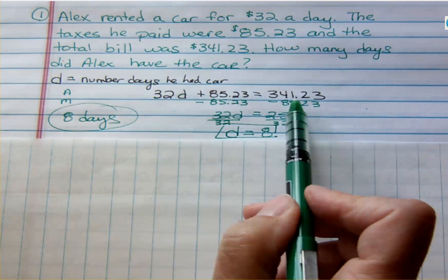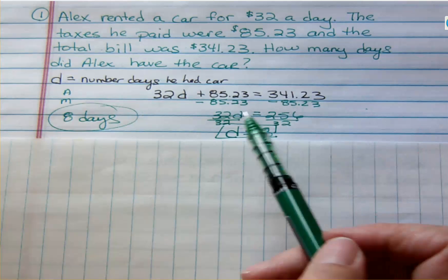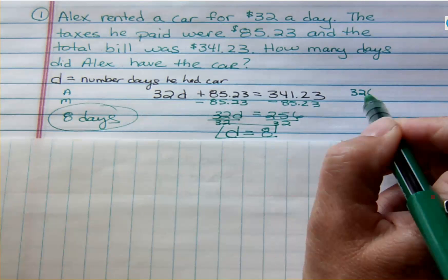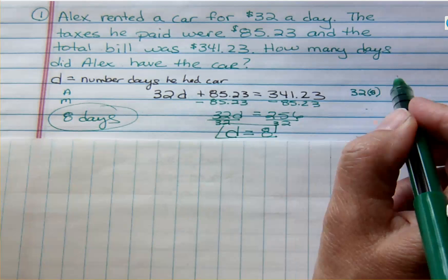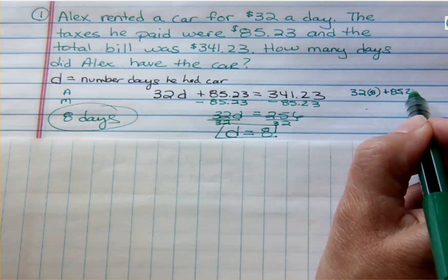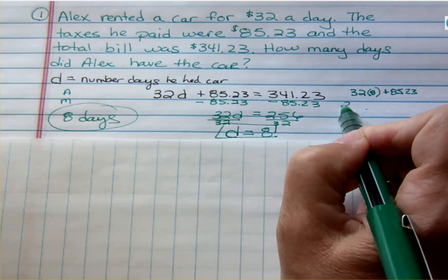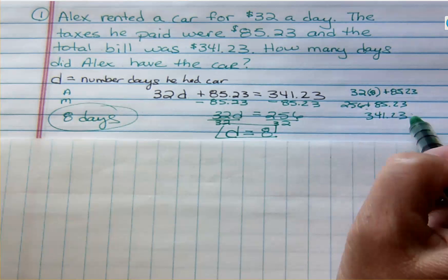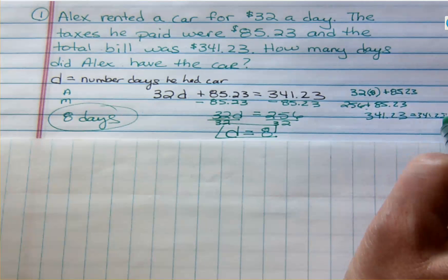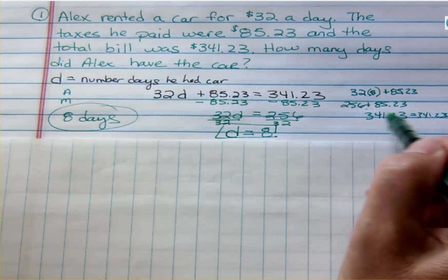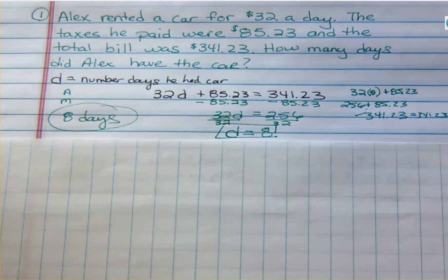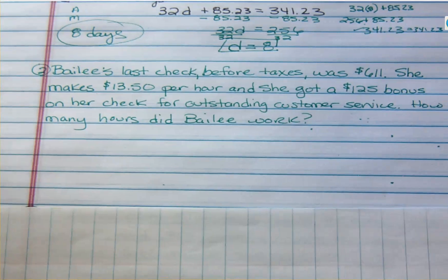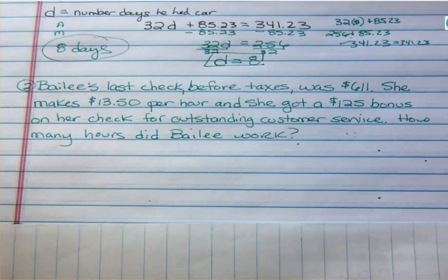That's how I would answer this. Now this equation type starts to have meaning — that's why you could end up with an equation like that. And of course, you can check it. I'll put in 8 for D: 32 times 8 is 256, plus 85.23 is 341.23, which is what our equation was supposed to equal. We're just checking to make sure that both sides of the equation are the same. So that's my first example. I'd love for you to try the next one on your own and then come back and see how you did — it's a very similar problem, so you can use the last one to help you set it up.